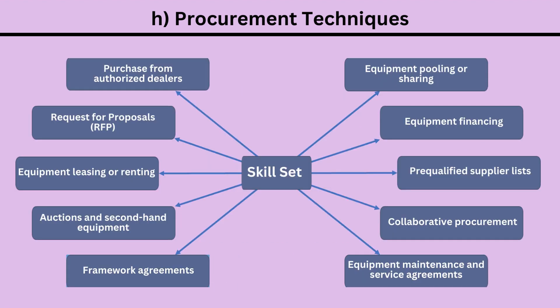Equipment acquisition procedures include: 1. Purchase from authorized dealers. 2. Request for proposals (RFP). 3. Equipment leasing or renting. 4. Auctions and second-hand equipment. 5. Framework agreements. 6. Equipment pooling or sharing. 7. Equipment financing. 8. Prequalified supplier lists. 9. Collaborative procurement. 10. Equipment maintenance and service agreements.